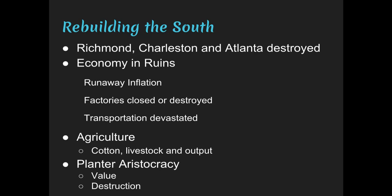Rebuilding the South was a massive challenge. Richmond, Charleston, and Atlanta had been destroyed during Sherman's march. Economically, the South lay in ruins — banks had been ruined by runaway inflation, factories were closed or destroyed, and the transportation system was devastated. Cotton fields were now fields of weeds, livestock was gone after the northern invasion, and agricultural output did not return to 1860 levels until 1870. The planter aristocracy had lost complete value as the slaves' value had disappeared and many mansions were destroyed.